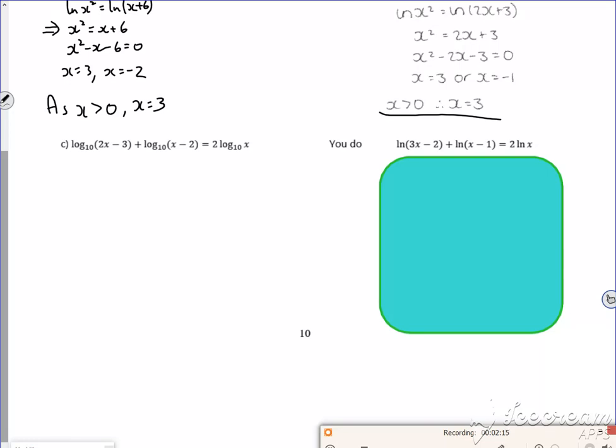Right, so let's have a look. So the plus means multiplying together, doesn't it? So we'd want to combine these as a single log first. So log to base 10 of 2x minus 3 times by x minus 2. I can do this because it's the same base. It's log to base 10.